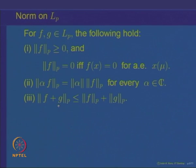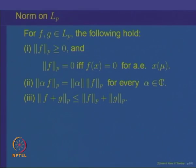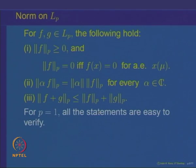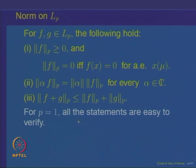The third property we want to prove is the triangle inequality: ‖F+G‖_P ≤ ‖F‖_P + ‖G‖_P for F, G ∈ L^P. For P = 1, this was obvious because |F+G| ≤ |F|+|G| implies ∫|F+G| d μ ≤ ∫|F| d μ + ∫|G| d μ. But for P ≠ 1, we need more calculations, and we will prove it first for the case P > 1.